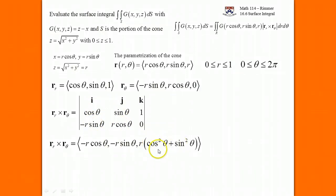So the cross product is simply minus r cosine theta, minus r sine theta, and r. That is the cross product of those two vectors, those two partial derivative vectors. We need its magnitude.